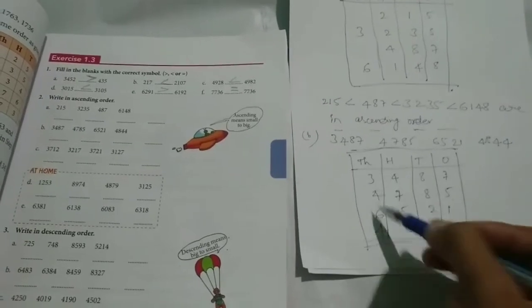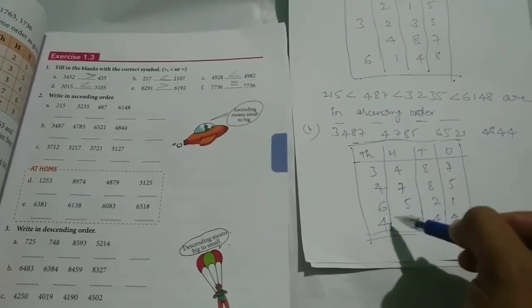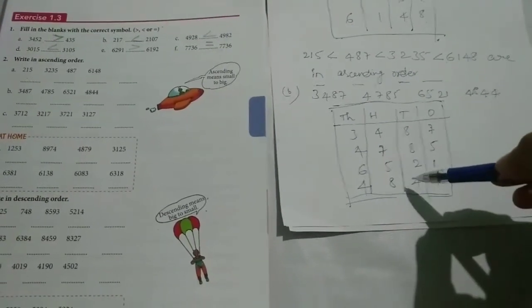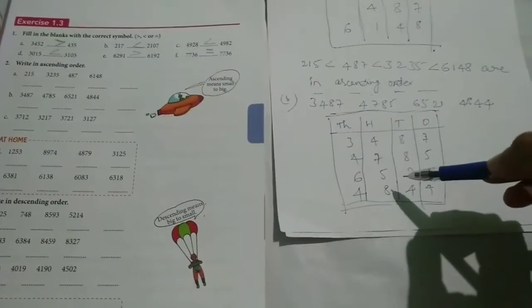Now in all the columns they have given 4 digits only. How to identify now? I will explain the remaining in the next class. Enough for today. Thank you.